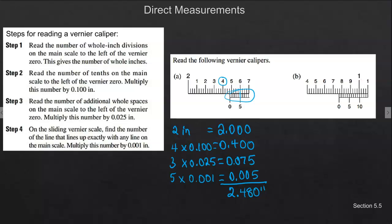And then on the next one, we are at zero inches. And then we're at seven tenths. We have two spaces. Remember, we're looking to this line, so two times 0.025. And then where do our lines line up? And it's all the way over. Let's see, where are we?